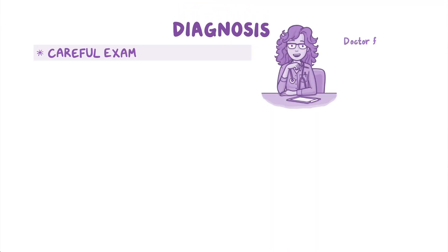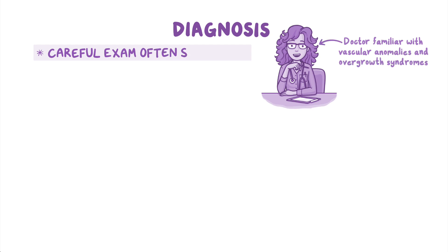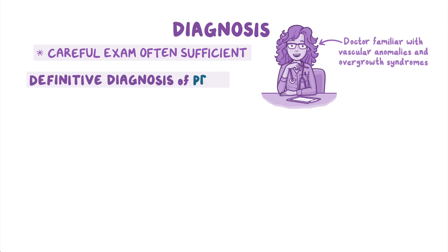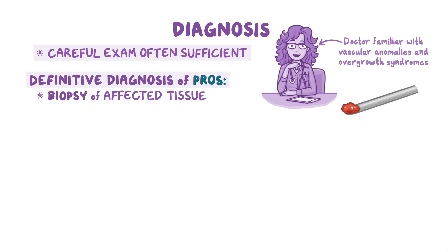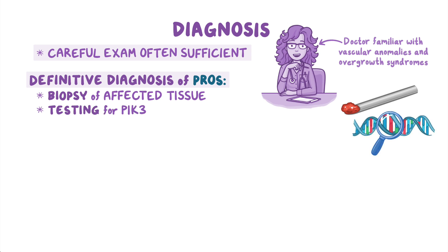Careful examination by a doctor familiar with vascular anomalies and overgrowth syndromes is often sufficient to make a clinical diagnosis. However, the definitive diagnosis of PROS involves a biopsy of affected tissue to identify a PIK3CA mutation.